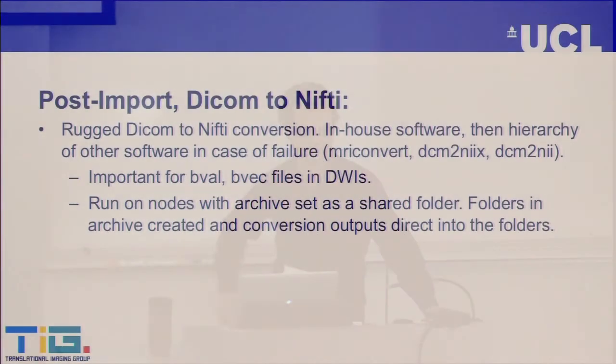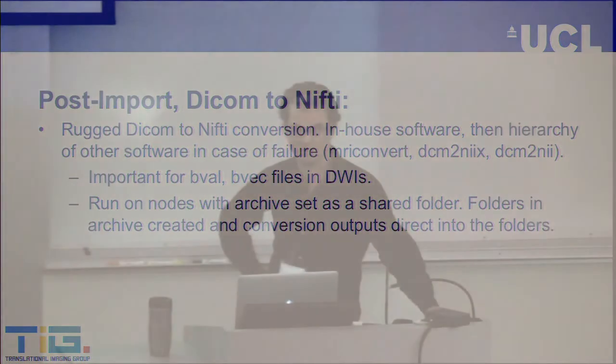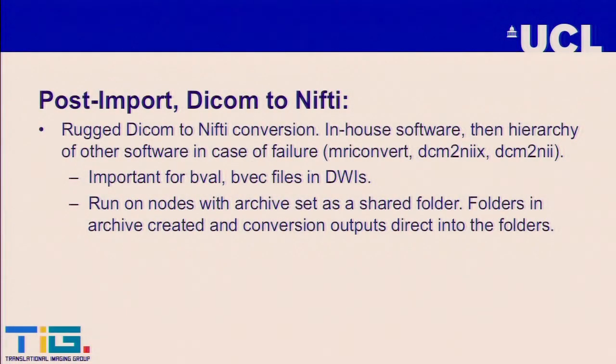We start first with the in-house software, then every other software, to try and ensure that the DICOM is converted. One thing we found of interest is that because there are sometimes multiple different types of files in a scan, trying to get the BVec and BVal values is a real problem using dcm2niix and correlating them to the correct file. The DICOM-to-NIfTI output goes directly into the archive folder.